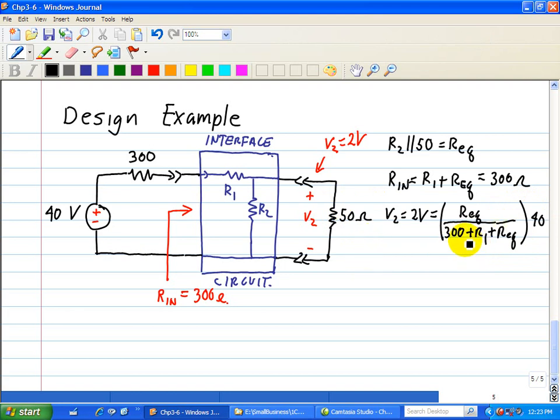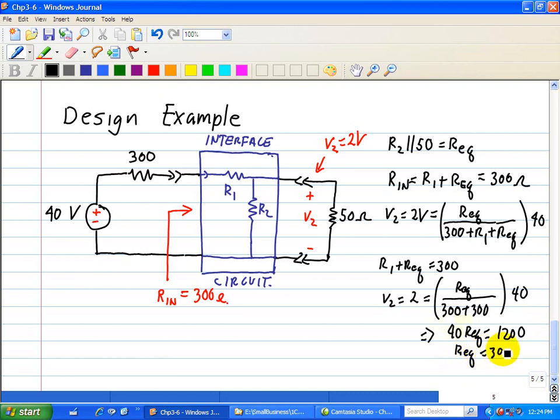We note that R1 and REQ must equal 300 so that R1 plus REQ is 300. So we have V2 is equal to 2 which is equal to REQ all over 300 plus 300 times 40. So that implies that REQ is equal to 1200 divided by 40, which implies REQ equals 30 ohms.